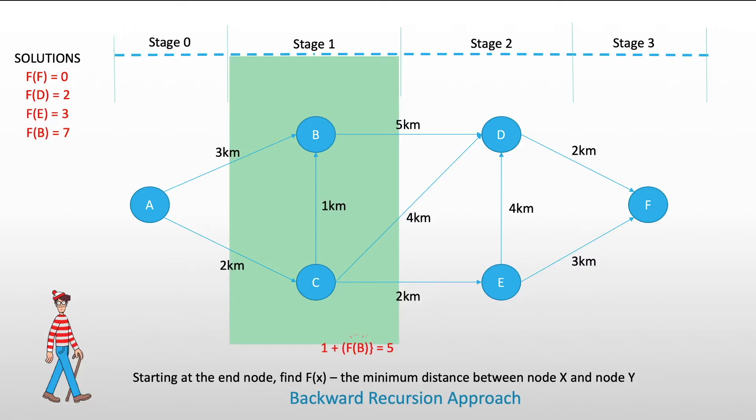Now, at f of C, there are three ways in order to go to f of F, either to pass by B, to pass by D, or to pass by E. What we have to do is to find the minimum between all of these paths. So, first, let's try 2 kilometers plus f of E, which is equal to 3. 4 kilometers plus value of f of D, which is equal to 2 kilometers, and 1 kilometer plus the value of f of B, which is 7. Here, what we found is the shortest path is C to E, which is 5 kilometers. Therefore, the value of f of C is equal to 5.